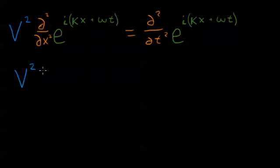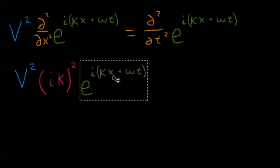So after I take two derivatives of this function, I'll write this part in this pinkish purple color, i times k. And since I'm taking two derivatives, I'll actually get two factors of i times k. So I'll square i times k. And then once again I'll get my function back.